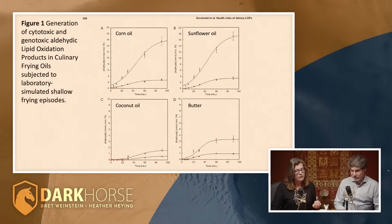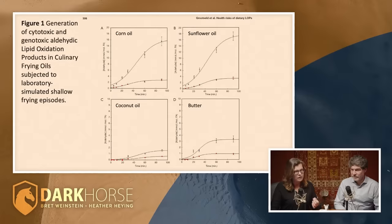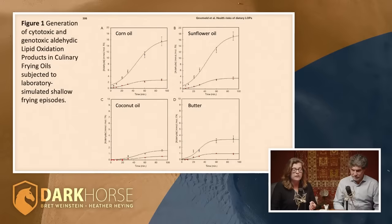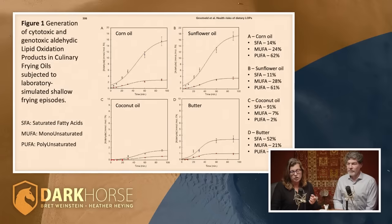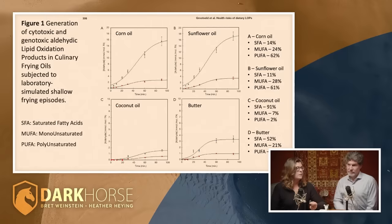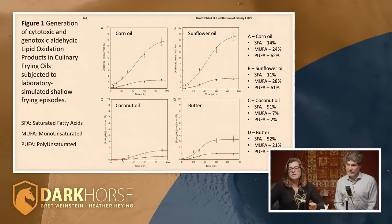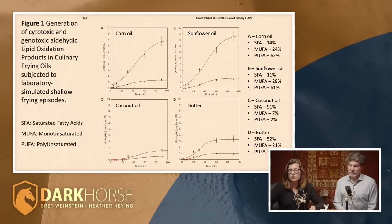To clarify: saturated fats, monounsaturated fats, polyunsaturated fats — these authors say all unsaturated fats are not equal. The less unsaturation, the better. So monounsaturated is actually better than polyunsaturated fats. Their ratios: in corn oil, 62% polyunsaturated fats; in sunflower oil, 61% polyunsaturated fats — basically equivalent between those two.